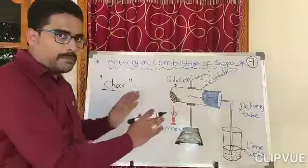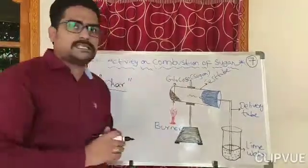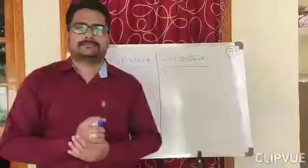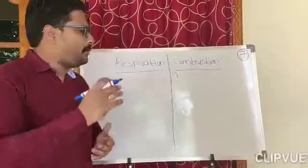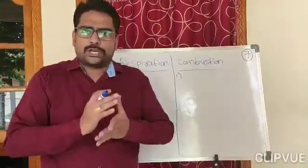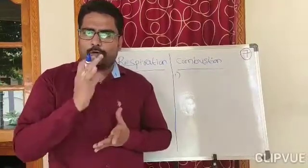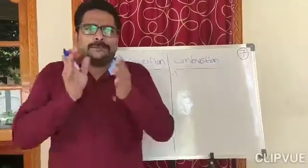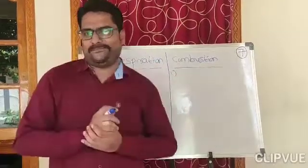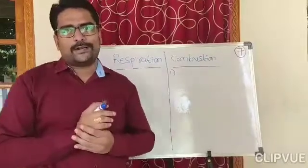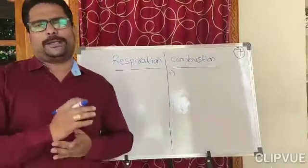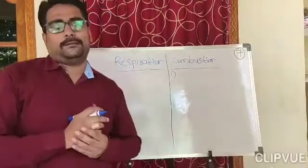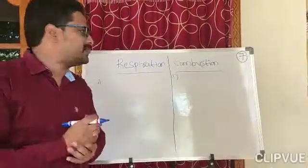During the activity on combustion of sugar, when we burn glucose or sugar solution in a test tube, carbon dioxide gas is liberated, which turns lime water milky white, energy is released in the form of heat, and water is also produced. Now let us discuss the differences and similarities between respiration and combustion. In both combustion of sugar and respiration, the products are the same — CO2, energy, and water. So respiration and combustion both appear to be similar, but there are some differences too.